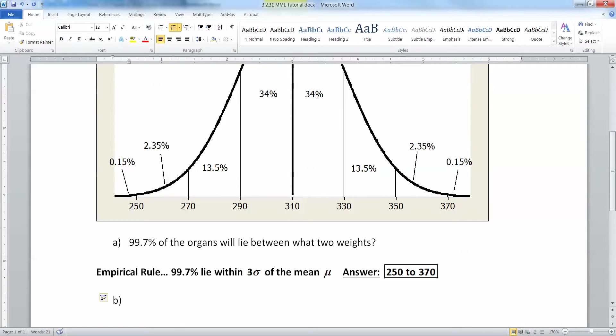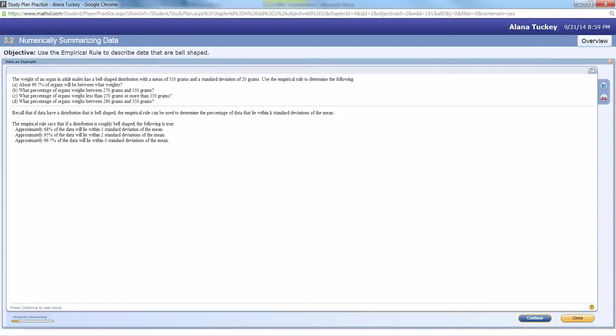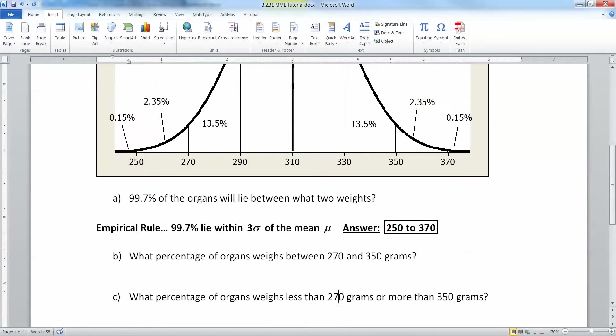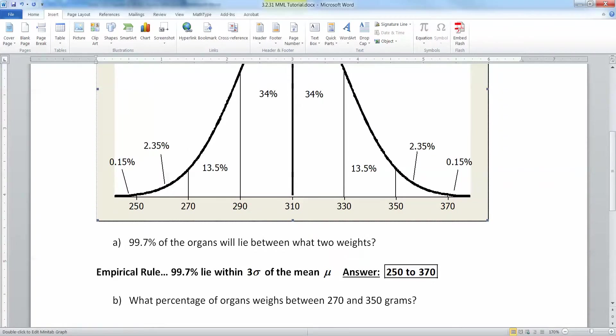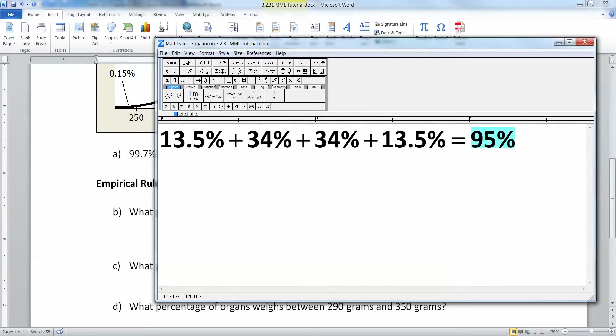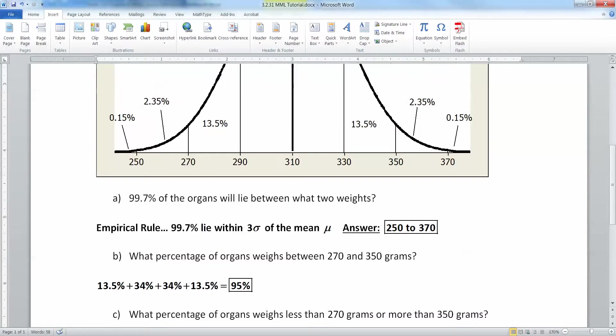Now letter B. What percentage of the organs lie between 270 and 350? 270 is right here on the left, 350 is all the way over here. So we need to add up those four sections: 13.5, 34, 34, and 13.5. So 270 to 350, that means you start at section 270 and move to the right. You're going to add up 13.5%, 34%, 34%, and 13.5%. That makes a grand total of 95% because that is technically two standard deviations. 270 is two standard deviations to the left, 350 is two standard deviations to the right. That makes 95%.